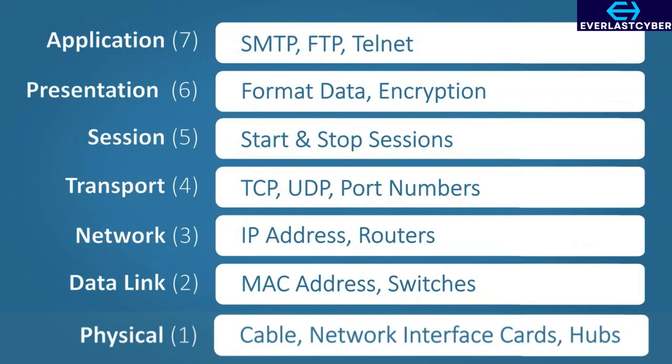A great way to remember these layers is simply: All People Seem To Need Data Processing — A, P, S, T, N, D, P.